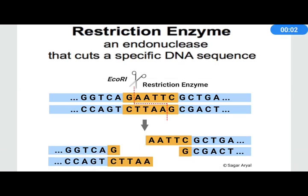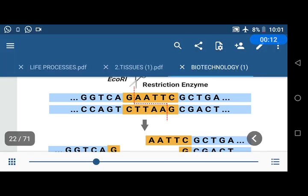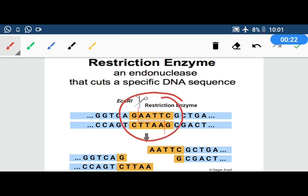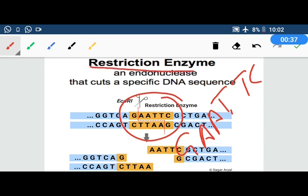Good morning. We had to study restriction endonucleases — restriction enzymes are enzymes that cut DNA at a specific DNA sequence. A common example is ECO-R1. ECO-R1 is a restriction enzyme that cuts DNA at a specific sequence, and these restriction enzymes come in many different types.